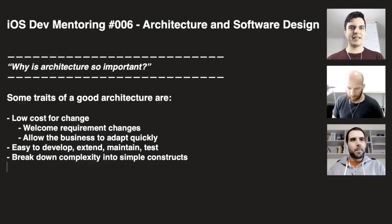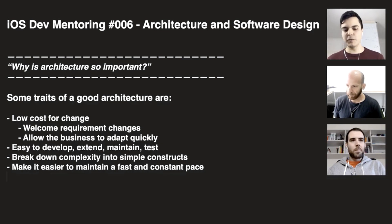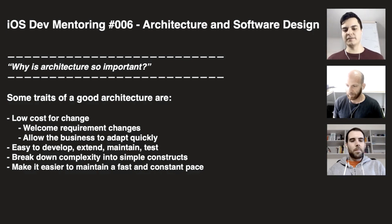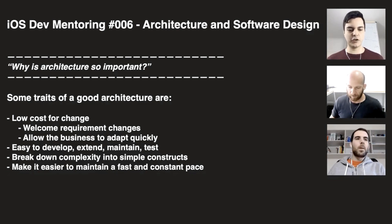Also break down complexity into simple constructs, make it easier to maintain a fast and constant pace throughout the development cycle — not just at the beginning, because at the beginning everyone is fast. But as the project grows, the speed tends to go down because things get in the way. If the design gets in the way, the team is going to slow down. But if you have good design principles since the beginning, you can grow the business, you can grow the code base and maintain a constant pace in the short and long term.